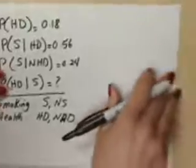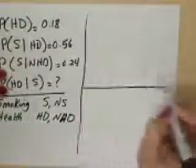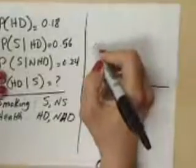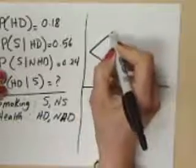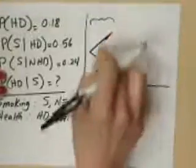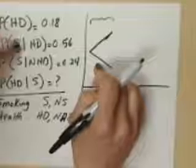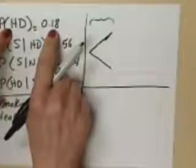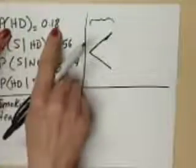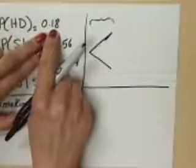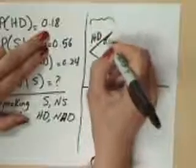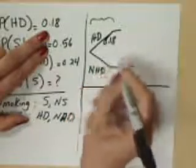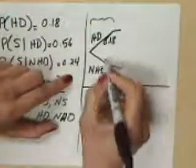When you have problems like this, what you need to do is draw two diagrams. The first tree must have a set of branches that start off the analysis, and those branches should represent the variable for which you have a prior probability. Here, we have the probability of heart disease being 0.18 — everything else is conditional. So I'm going to put HD 0.18 on this branch, and the other branch is the complement, no heart disease, which is 1 minus 0.18 = 0.82.